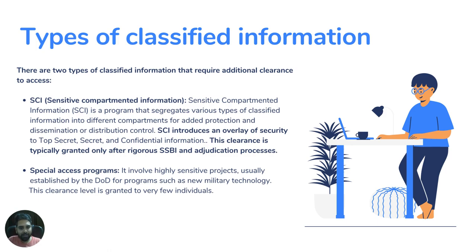SCI is a high-level information that can be processed after SSBI — Single Scope Background Investigation. This kind of SCI access can be provided to a candidate. By the way, it is not a kind of clearance — it is special authorization to access information. TS/SCI or SCI is not a security clearance.